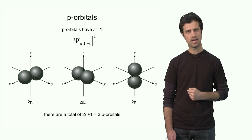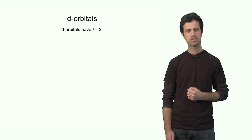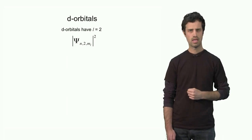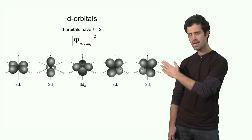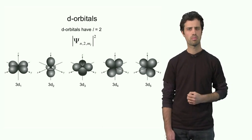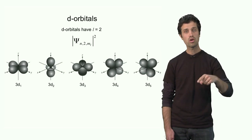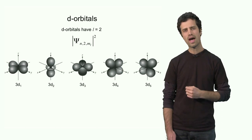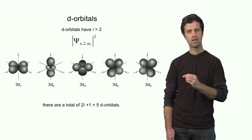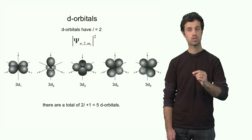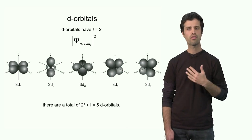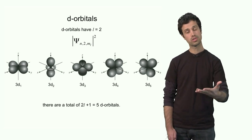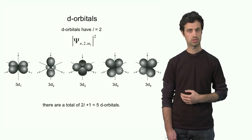The next in line are the d orbitals, defined by l equals 2. The square modulus of the wave function shows much more complicated shapes, because there are more wave properties on the spherical surface. There are a total of 5, because 2l plus 1 equals 5 — that is, 2 times 2 plus 1 equals 5. There are 5 d orbitals: for example, five 3d orbitals, five 4d orbitals, and so forth.